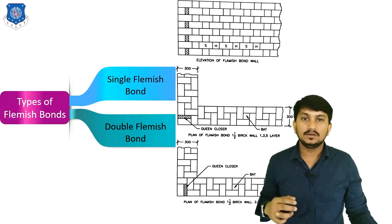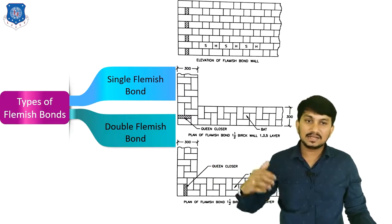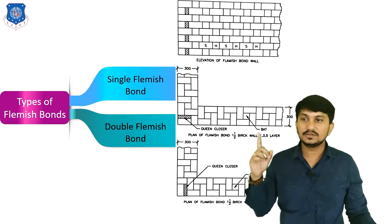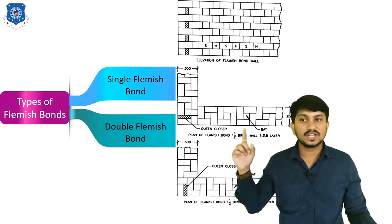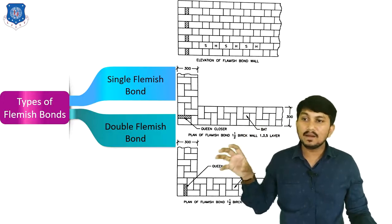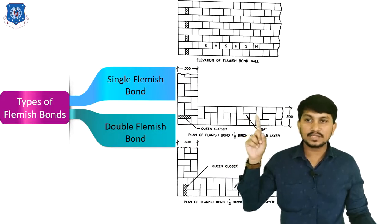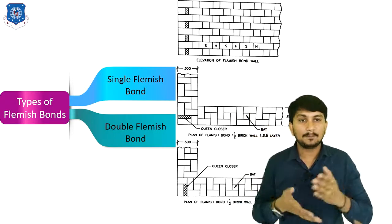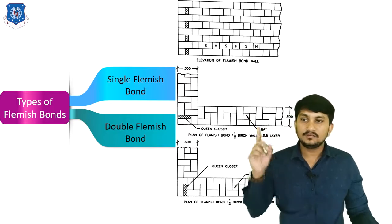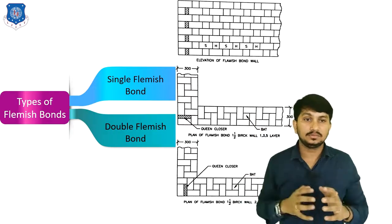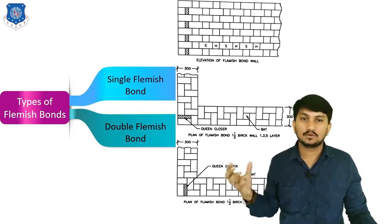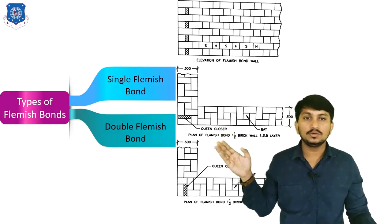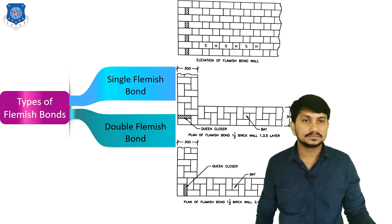Now let's discuss double Flemish bond, where at both facing and backing, the appearance is the same — one stretcher, one header alternating. But in double Flemish bond, at the halting portion, which is the middle portion between facing and backing, half bricks are used, which reduces the overall strength of the wall. This is the double Flemish bond for one-and-half brick wall, where two queen closers are provided to disturb the vertical joints.